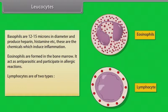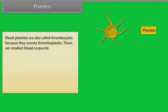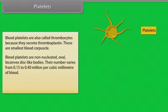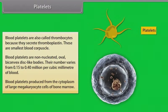Lymphocytes are of two types: B and T lymphocytes. They fight with diseases. Blood platelets are also called thrombocytes because they secrete thromboplastin. These are the smallest blood corpuscles — non-nucleated, oval, biconvex disc-like bodies. Their number varies from 0.15 to 0.40 million per cubic millimeter of blood. Blood platelets are produced from the cytoplasm of large megakaryocyte cells of bone marrow.